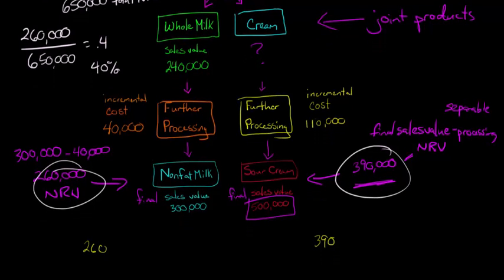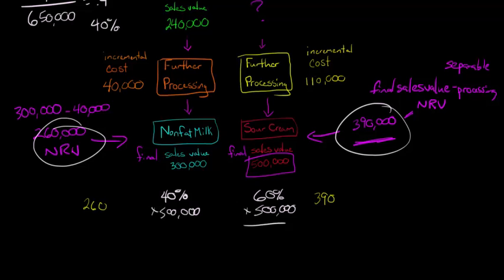So here we've got 40, when we figure out how much cost to allocate here, we'll take 40% times $500,000. And then for the sour cream, we'll take 60% times $500,000. And so we will end up with the total amount allocated, we'll have $200,000.